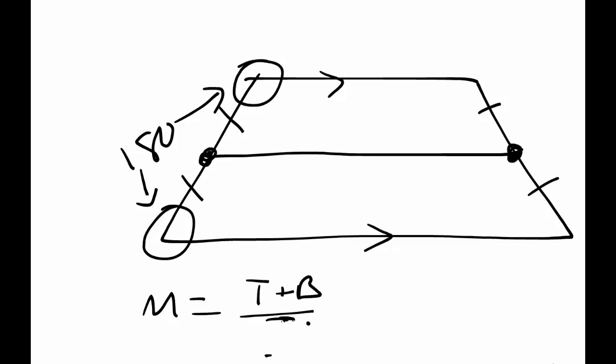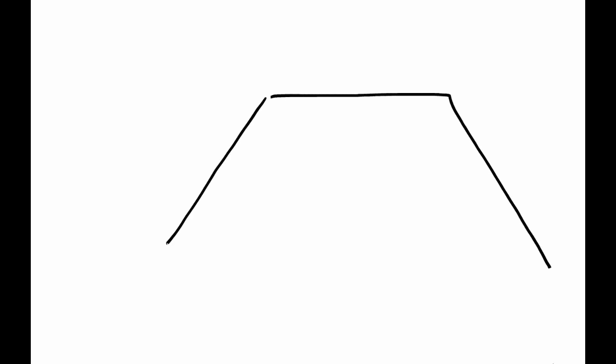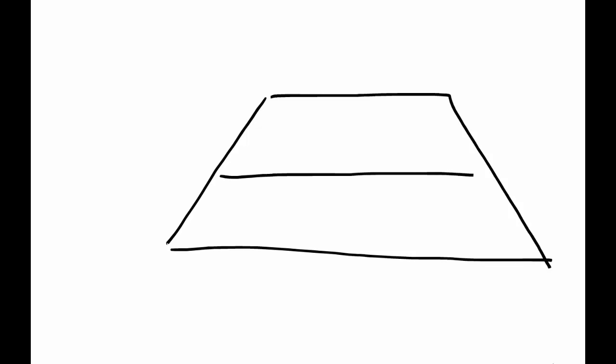Now the last few problems on the sheet we've been working on deal with trapezoids and their medians. You'll be able to solve those problems now because you know this middle length is found by averaging the top and bottom sides.